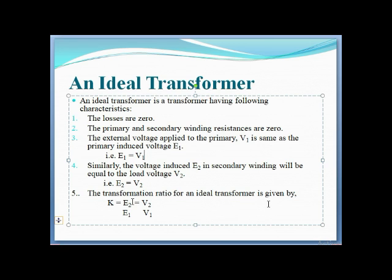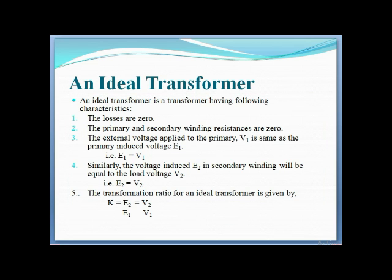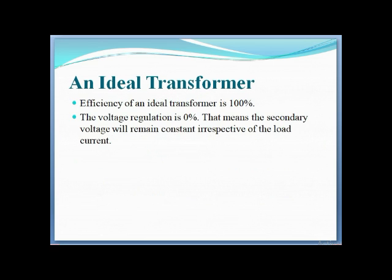The transformation ratio K = E2/E1 = V2/V1. The efficiency of an ideal transformer is 100%, and voltage regulation is zero percent, meaning the secondary voltage is constant irrespective of the load current.